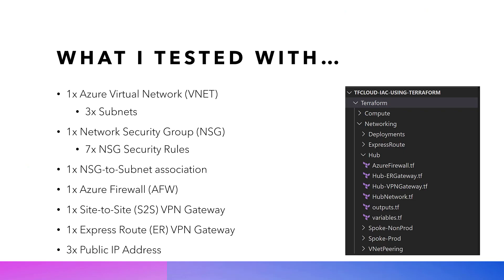Here's what I tested with it. I had a series of Terraform templates as a module compiled together, which created a virtual network in Azure with three subnets, a single network security group with seven rules and one NSG-to-subnet association, Azure Firewall, two VPN gateways — one for site-to-site and one for ExpressRoute — and three public IP addresses for the firewall and the two gateways.